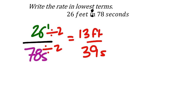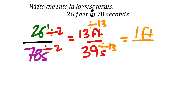I know 13 feet and 39 seconds are both divisible by 13. So 13 divided by 13 is 1 foot, and 39 divided by 13 is 3 seconds. The rate in lowest terms is 1 foot to 3 seconds.